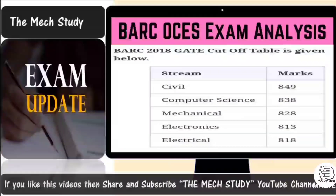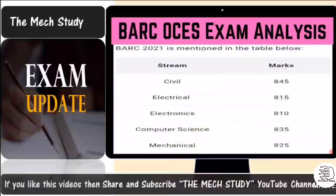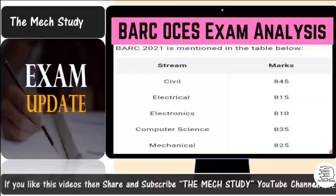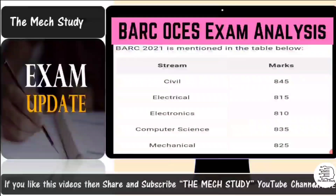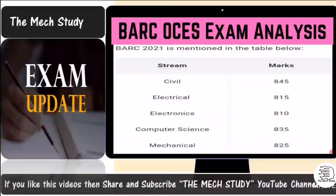For GATE 2021, if your marks fall in that trend, definitely prepare for the interview. Keep in mind the calling ratio is 1 to 24 — for every 20 interviews they select only one candidate, so being called is not definitive selection. The expected cutoffs are: Civil 845, Electrical 815, Electronics 810, Computer Science 835, and Mechanical 825.